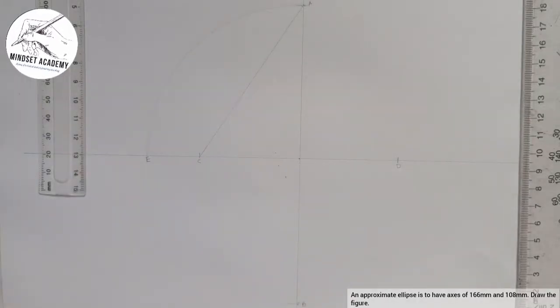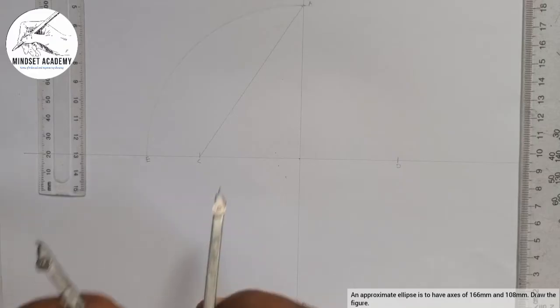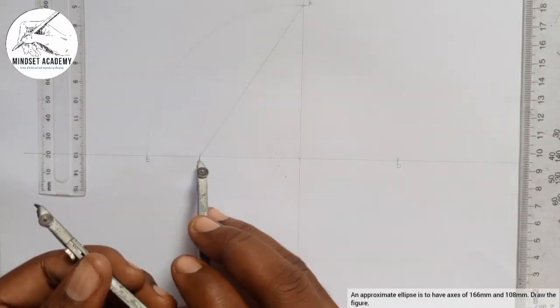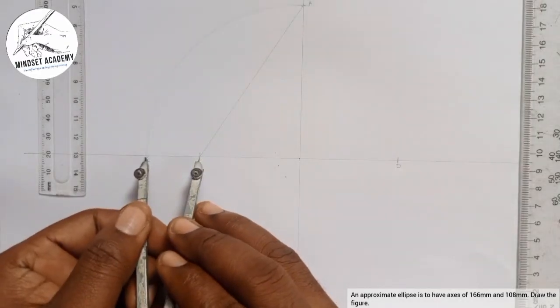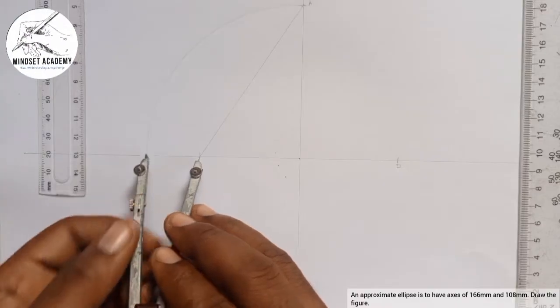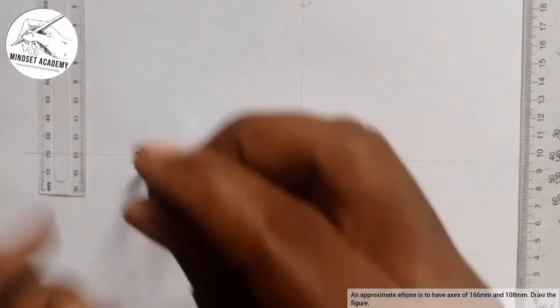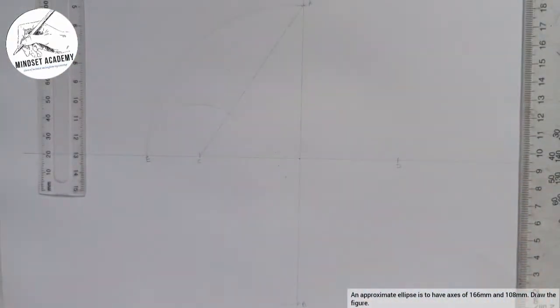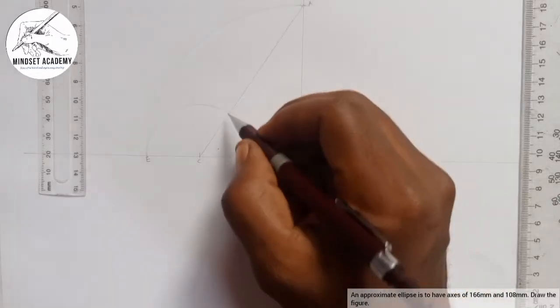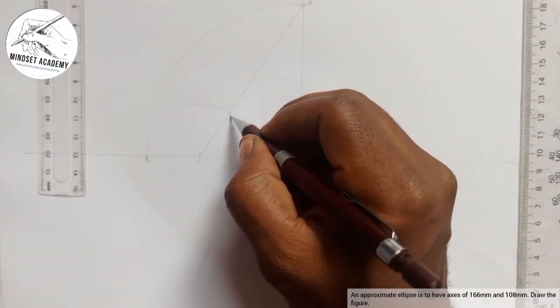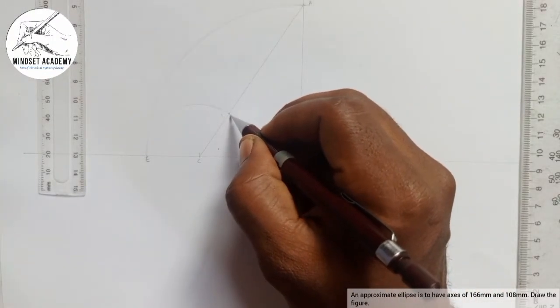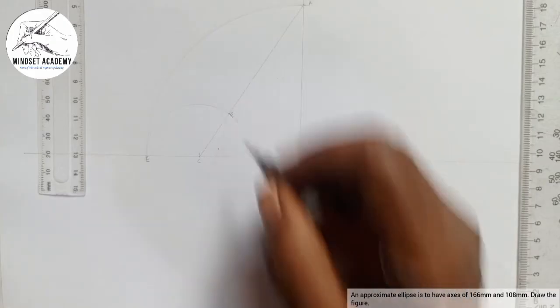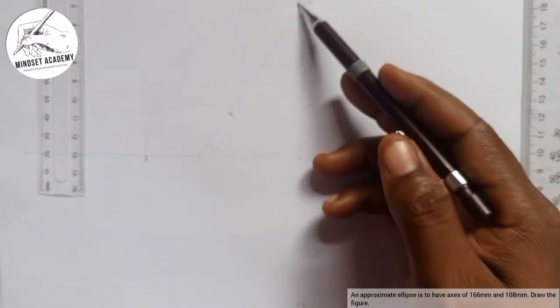Now the next step is, you place your compass at point C, which will just E, and you draw another arc this way that will cut AC. Where it cuts AC you are going to call it point F. Now we have F and A.